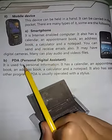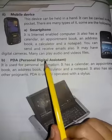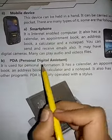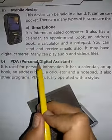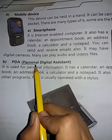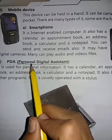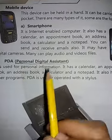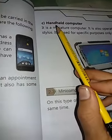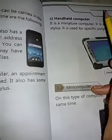Mobile devices کی تین types ہیں: smartphone، PDA، اور handheld computer۔ PDA stands for Personal Digital Assistant — بیٹا یہ MCQs میں آ سکتا ہے، اس لیے PDA کا abbreviation یاد رکھنا ہے۔ Third type ہے handheld computer۔